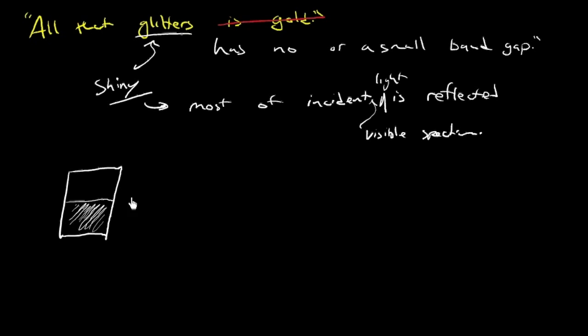We want to consider why a metal looks the way it does. Why is a metal shiny? That's what I'm trying to get at here. This is our band structure, and we have these filled states in a metal adjacent to unfilled states.